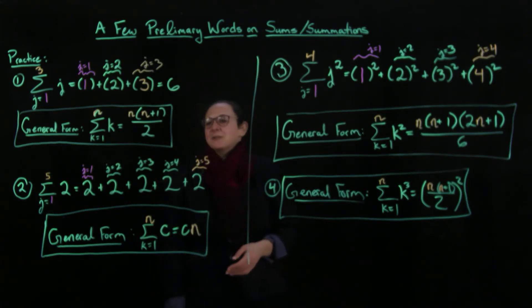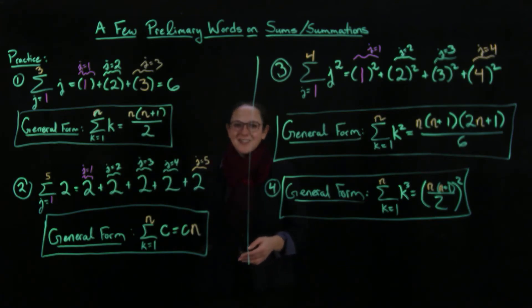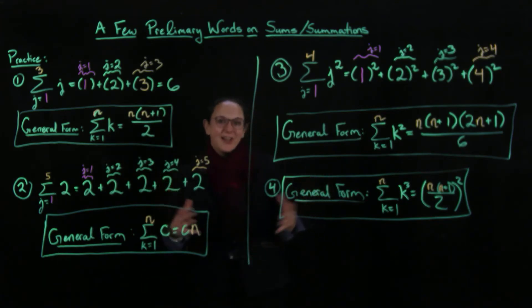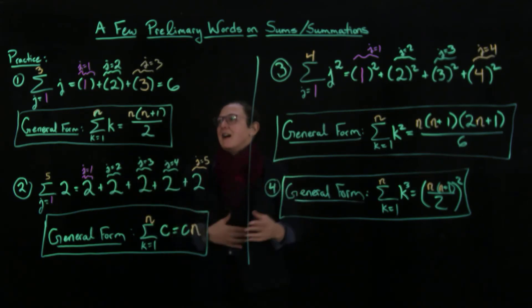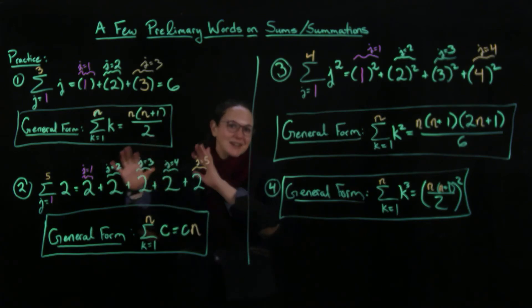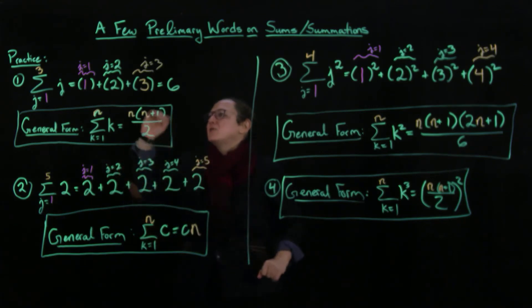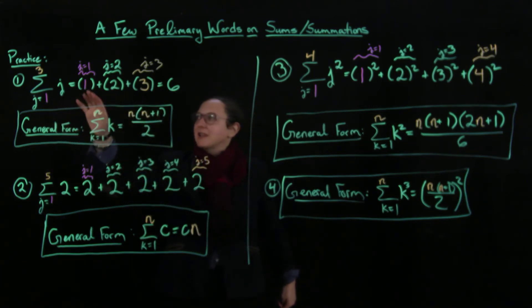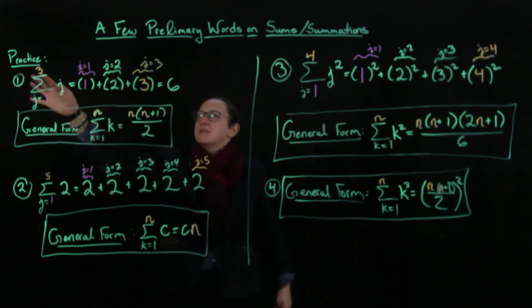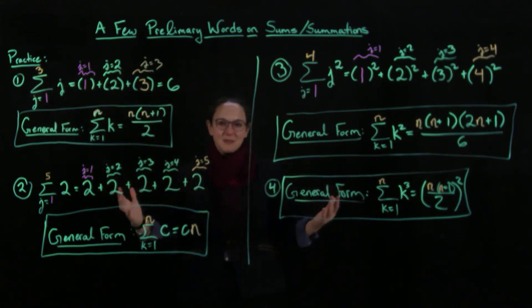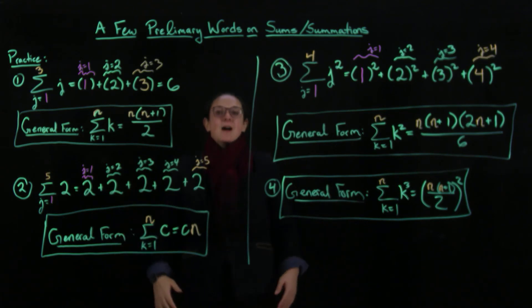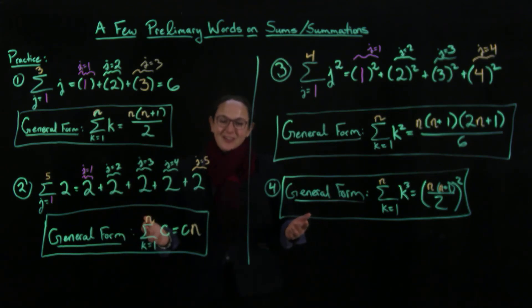I hope this will help as you go through, because summation notation can feel like 'what in the world is the professor talking about.' Having seen me work through a few examples, remember: you just start with the bottom number, plug it into the formula, and keep going until you hit the top. That's all you do — it's not that bad. I hope that was helpful and I'll see you in the next lecture.